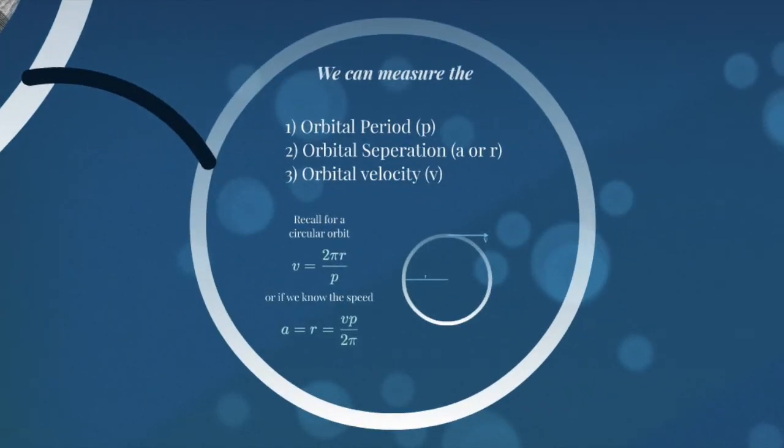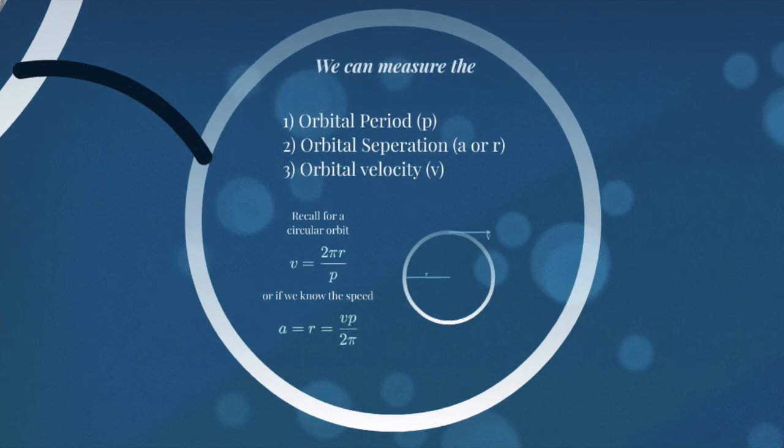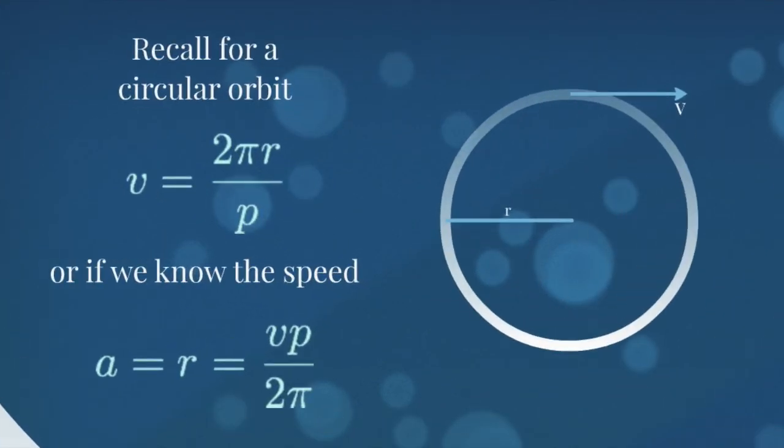So here then, if we can measure either of those three things, remember that as I'm watching these, I can measure the velocity of the orbiting star. And if that orbiting star is orbiting in a circle, then the speed that it orbits is the radius of the circle divided by the period, or the time it takes to go around the circle, so the distance per time.